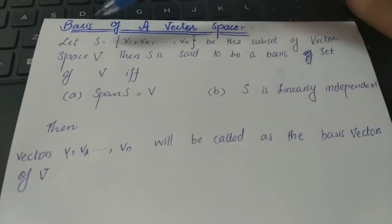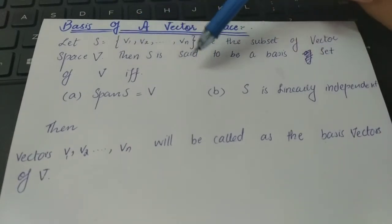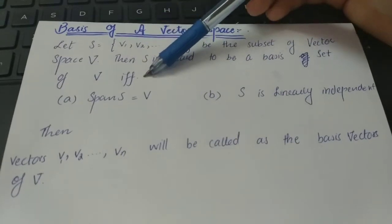Let S equal a set which includes vectors v1, v2 up to vn. Let S be the subset of vector space V. Then S is said to be a basis set of V if and only if the following conditions hold.